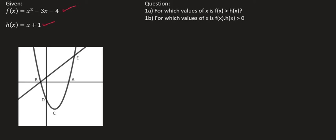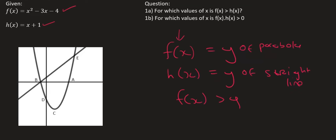Question 1a says, for which values of x is f of x. Let's stop right there. What does f of x mean? If you've watched the previous videos on where I explain what this means, you must know that that means y. Some students still struggle with that. And then h of x is the y value of, so I'm going to say y value of parabola and y value of straight line.